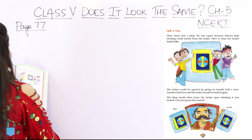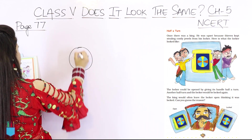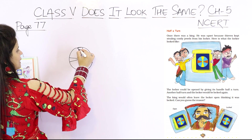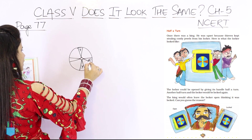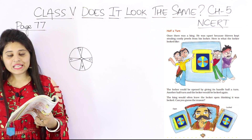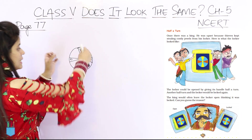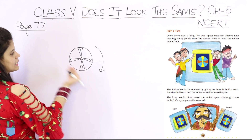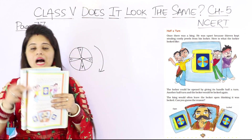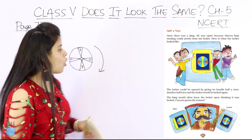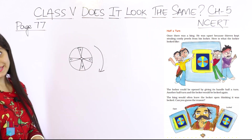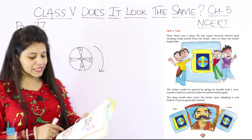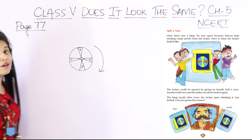The locker could be opened by giving its handle a half turn. When you give it a half turn, the yellow part comes up. What you will notice is that it is locked in the same pattern, and when it is open, it is also the same pattern. So the king gets confused and sometimes forgets to lock it, because the locked and open patterns look exactly the same.